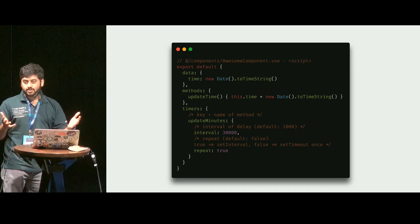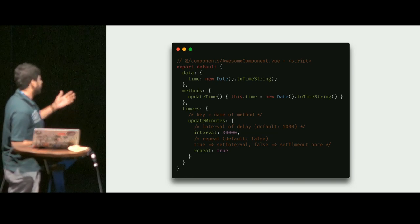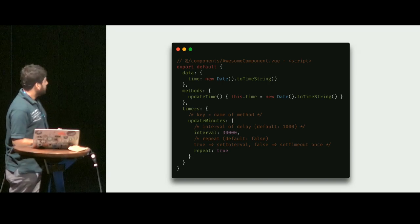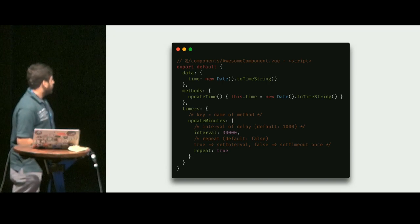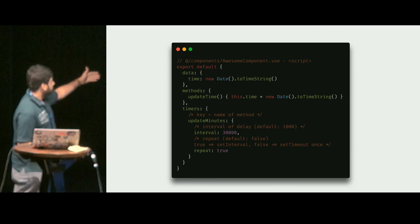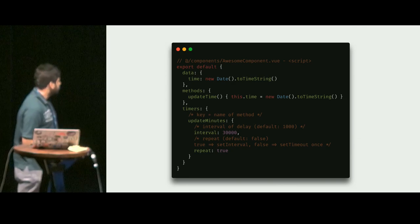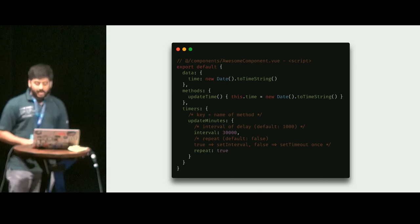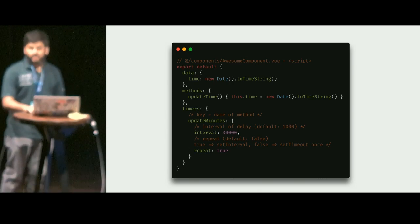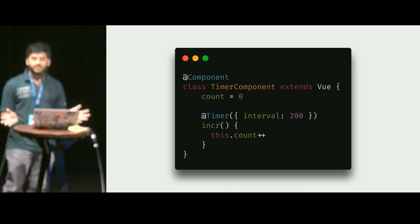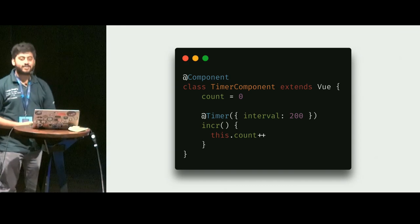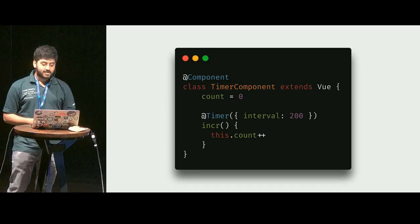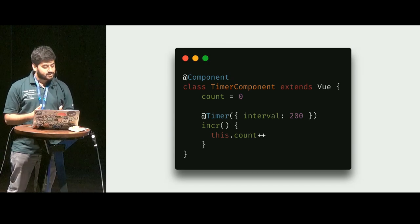If you have used Vue before, you know there isn't a key called timers inside the Vue instance by default — but that's what my plugin does. If you add a timer for update minutes with an interval of say 30 seconds, that function is going to run every 30 seconds. And if you use TypeScript, it's even easier — you can annotate it with a timer, set an interval, and it runs. That was the first time I actually made a plugin for Vue itself.